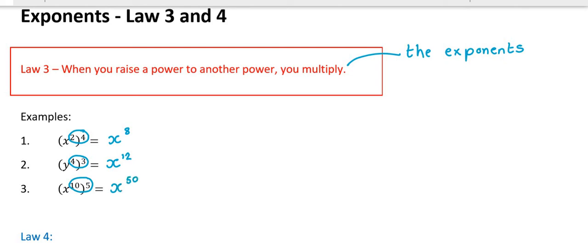Now the only problem is, remember what I said in class: once we start multiplying exponents, we get confused with Law 1. Law 1 is very different. Law 1 says when you multiply powers at the same base, you add exponents. So if you have x squared times x to the power of 3, you add those exponents to get 5. Don't get confused — Law 1 says add, whereas Law 3 says when you raise a power to another power, you multiply those exponents.